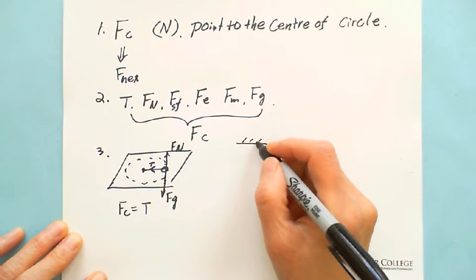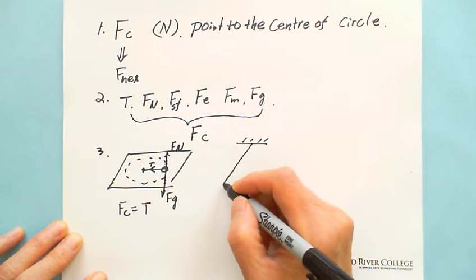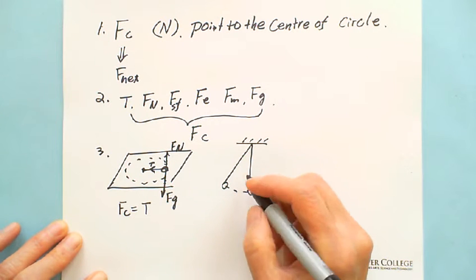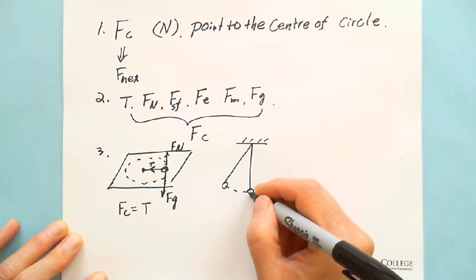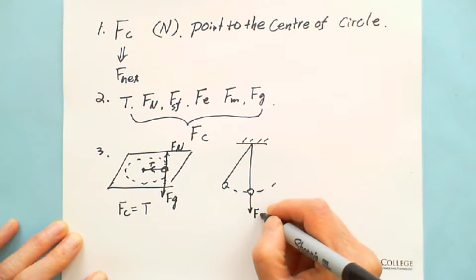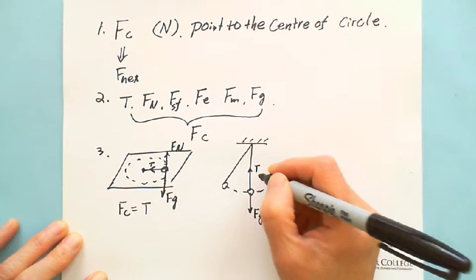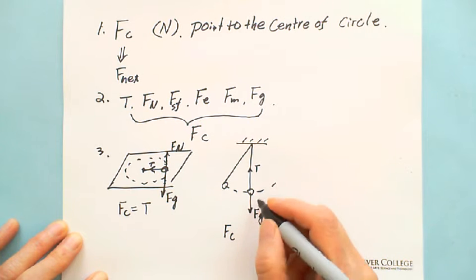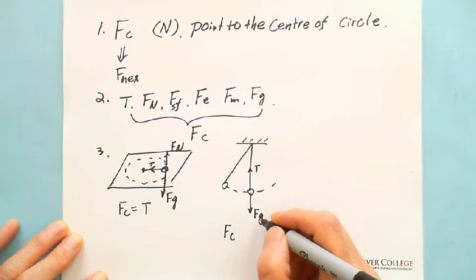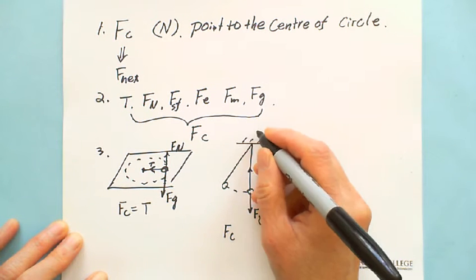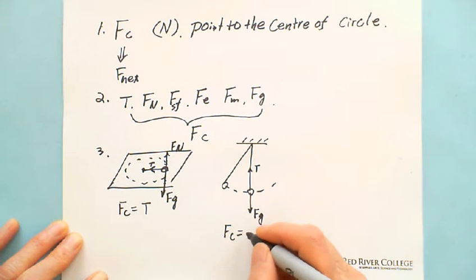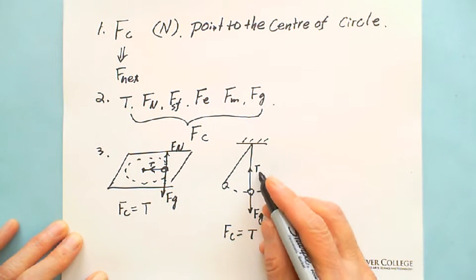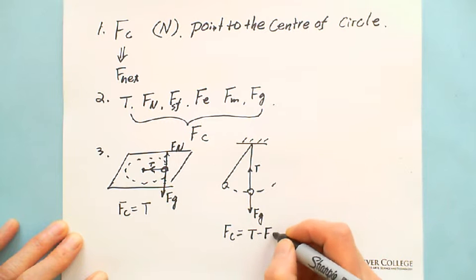For example, a pendulum swings back and forth. At the bottom, we have gravity and tension force. In that situation, the centripetal force comes from tension and gravity, because the center is pointing upward. So the centripetal force is the net force of tension and gravity.